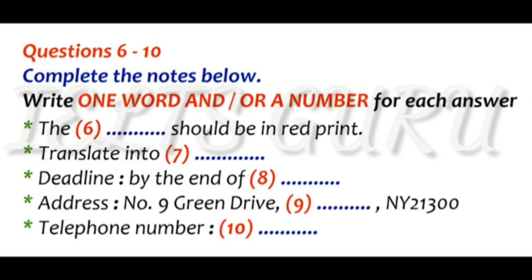Sure. Just keep me updated. So roughly, when can we get the revised print? We need it before the end of July. It's late June now. Roughly, it'll take three weeks to re-edit. So we'll definitely be ready before the deadline. Great. To where shall we send the samples? The address is number 9, Green Drive, Clifton, NY21300.